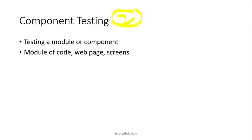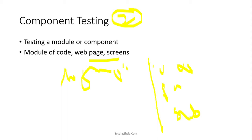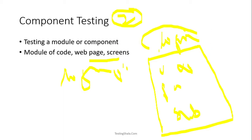The second type is component testing. In component testing, we club together various individual components written by developers to form a module. For example, a login web page is a module — it has a username field, a password field, and a submit button. Testing this entire login page is called component testing.